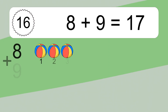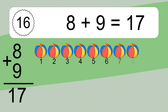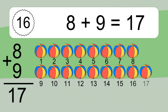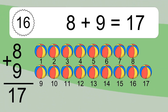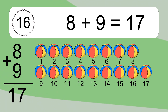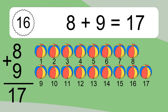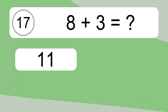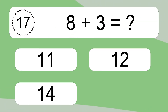8 plus 9 equals what? 8 plus 9 equals 17. Let's count it: 1, 2, 3, 4, 5, 6, 7, 8, 9, 10, 11, 12, 13, 14, 15, 16, 17.